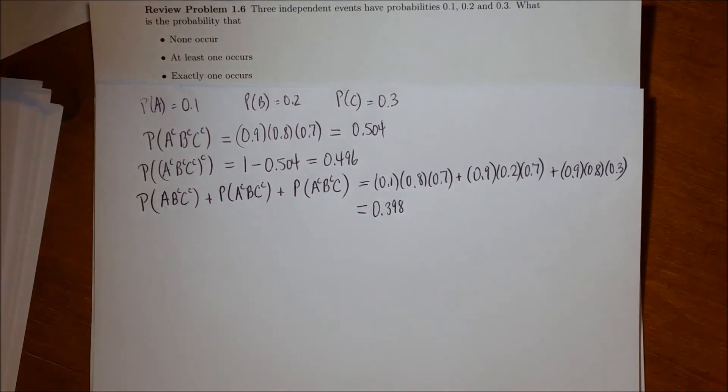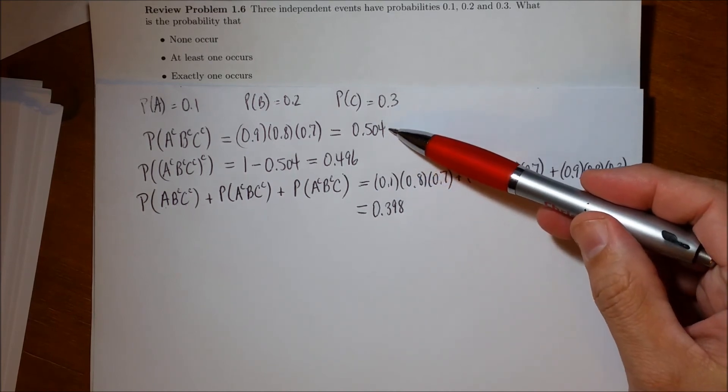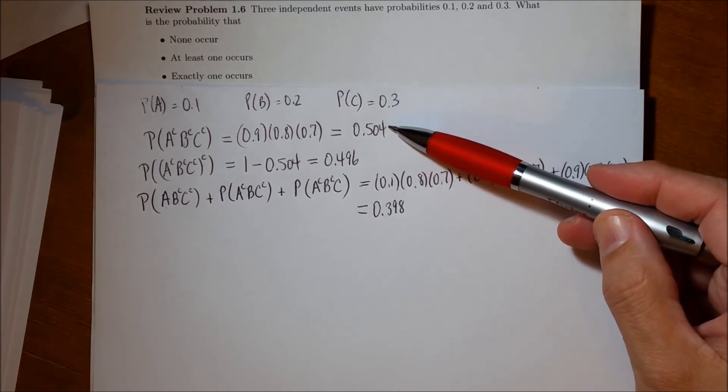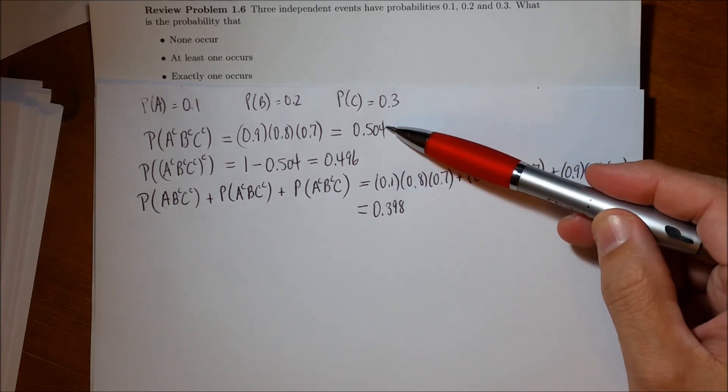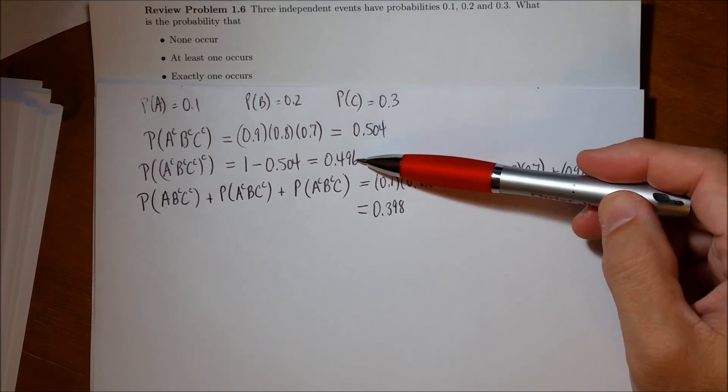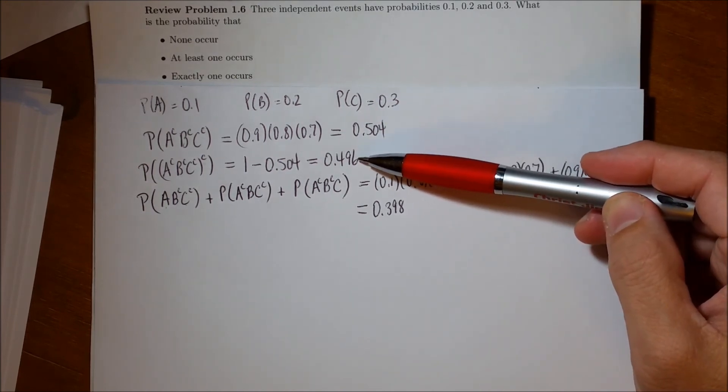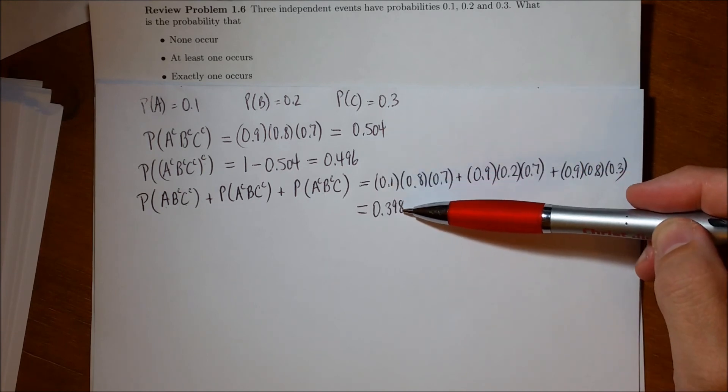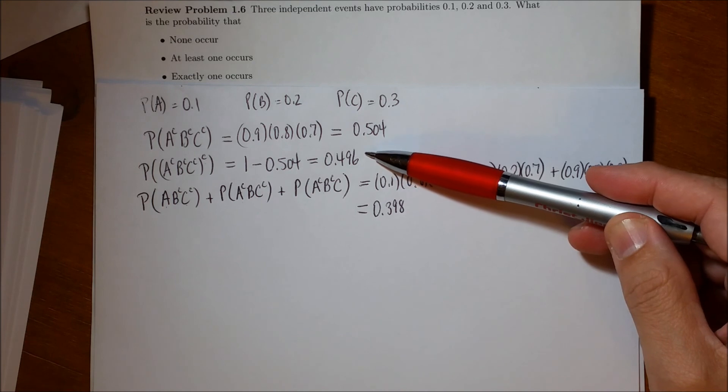And so that's the chance that exactly one occurs, and not surprisingly, this number is less than this number. 0.496 is the chance that at least one occurs, and that is more likely than exactly one occurring, because this counts the possibilities that two or three of them occur.